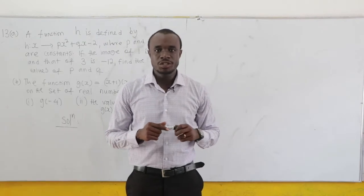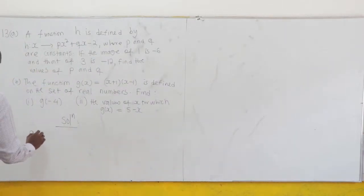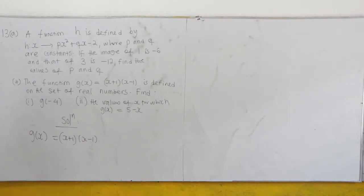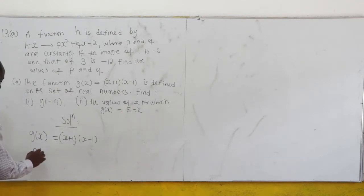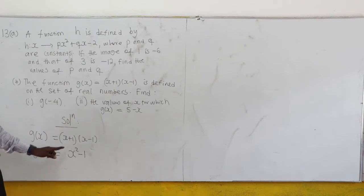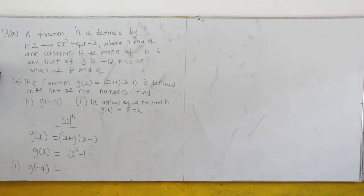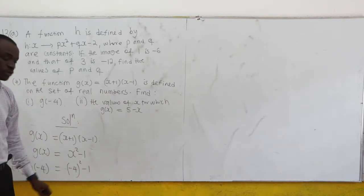December 2020, question number 13b. The function g(x) = (x + 1)(x - 1). If you have good eyes, that's just the difference of two squares, so you can rewrite g(x) = x² - 1. Now we want to find g(-4). We see x and put negative 4 there, so we have (-4)² - 1. Negative 4 squared is 16, so we get 16 - 1 = 15.